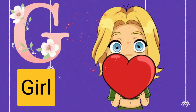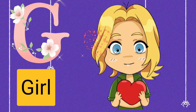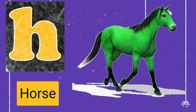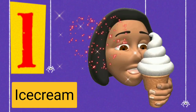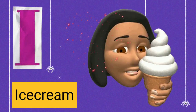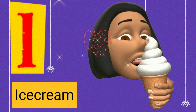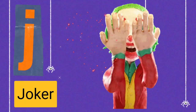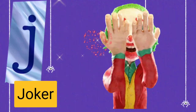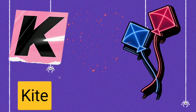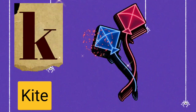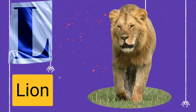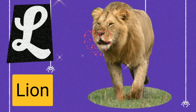G for girl, H for horse, I for ice cream, J for joker, K for kite.